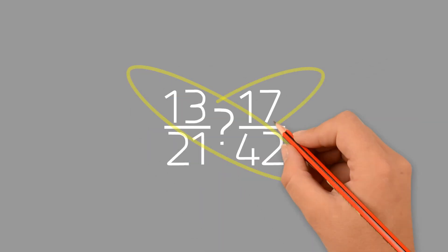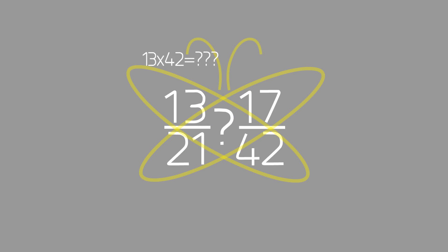If you want to add, subtract, or compare 13 over 21 and 17 over 42, we have to multiply the numbers inside of each wing. 13 times 42 and 21 times 17 are very hard and time-consuming, which makes the butterfly method less helpful.